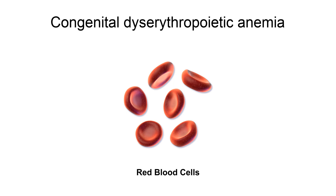Congenital dyserythropoietic anemia, CDA, is a rare blood disorder similar to the thalassemias. CDA is one of many types of anemia, characterized by ineffective erythropoiesis, and resulting from a decrease in the number of red blood cells, RBCs, in the body and a less than normal quantity of hemoglobin in the blood.